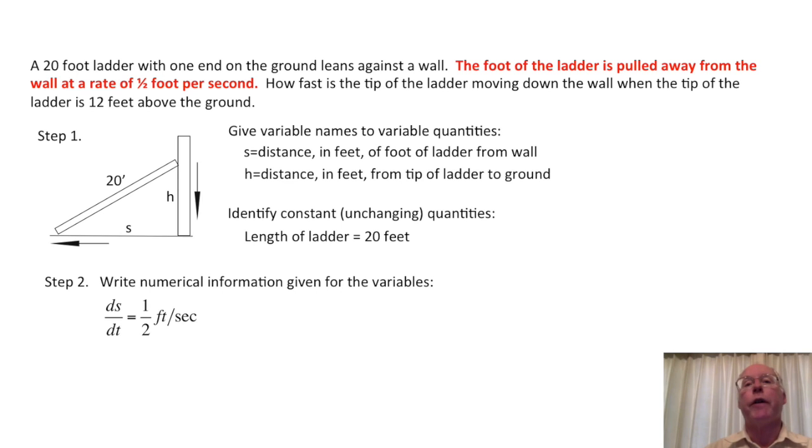This is telling us what is the derivative with respect to time of s. This carries units also. Because s is in feet and t is in seconds, the units for ds/dt are in feet per second. So the given numerical information is ds/dt equals one-half foot per second. This tells us how fast s is changing. The ds/dt is positive because s is increasing as the foot of the ladder is pulled from the wall.